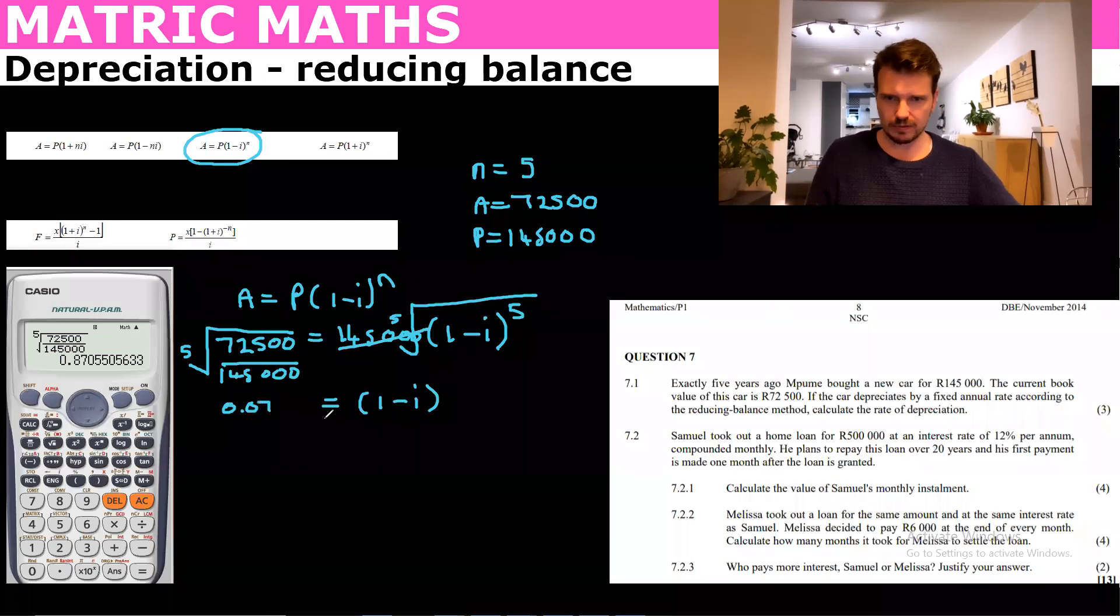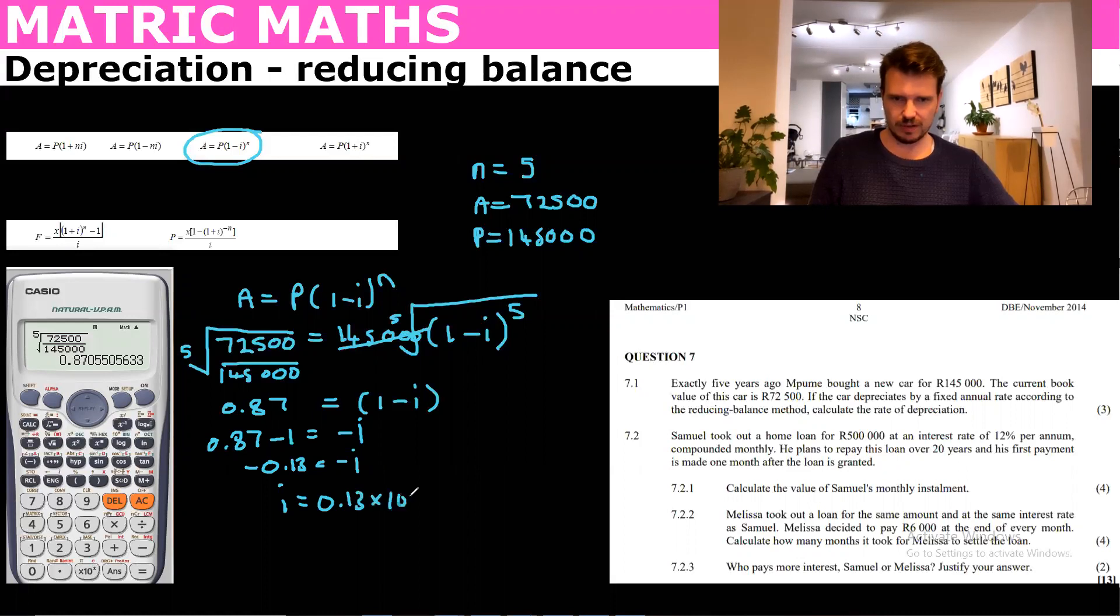0.87, and of course when we take 1 across to the other side we get 0.87 minus 1 equals minus i, so this becomes negative 0.13 equals minus i. So we get the i, the rate, is equal to 0.13 times 100 equals 13 percent.